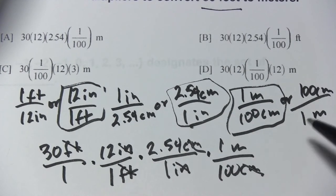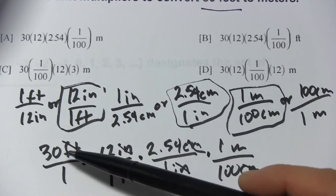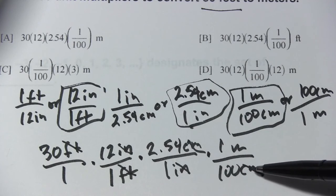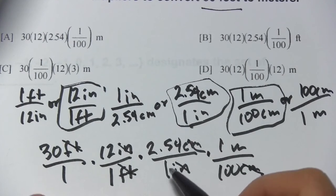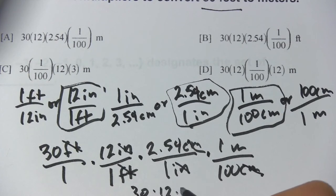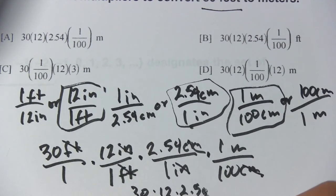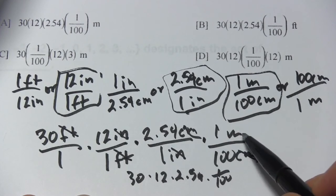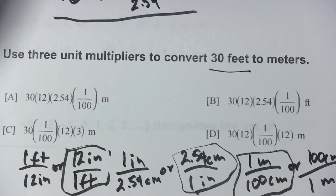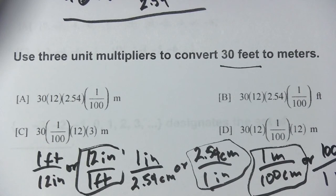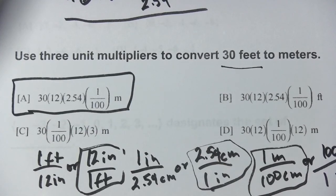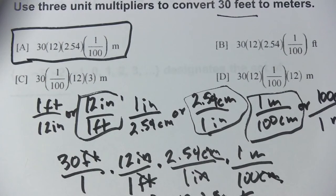Now I choose the one with centimeters on the bottom: 1 meter per 100 centimeters. Centimeters cancel, and we're in meters. Simplifying: we've got 30 on top, 12 on top, 2.54 on top, and 100 on the bottom — so this is 30 times 12 times 2.54 times 1 over 100, and it ends up in meters. That matches one of the answer choices. That's unit multipliers, conversion factors, and converting units of length.